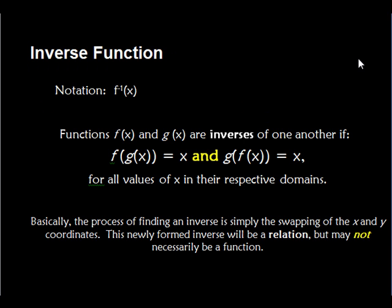Let me show you exactly what an inverse function is. The notation for an inverse function is f to the negative 1 of x. This negative 1 does not mean 1 over f — it tells us it's the inverse function of f. Functions f of x and g of x are inverses of one another if and only if f of g of x equals x and g of f of x equals x. Both conditions have to be true for the two functions to be inverses of each other. The process of finding an inverse is simply swapping the x and y coordinates and then solving for y.